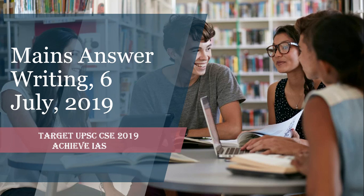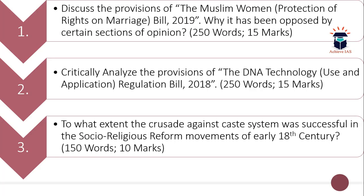So as is clear from the name, what we do in this series is we daily give you a certain number of questions of which you have to write the answers. So today is 6 July. The first question is: discuss the provisions of the Muslim Women Protection of Rights on Marriage Bill 2019. Why has it been opposed by certain sections of opinion? So here you have to discuss the provisions of the bill and also highlight why certain sections of society are opposing it. The word limit is 250 and the maximum marks are 15.